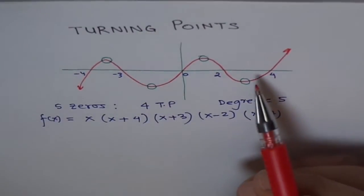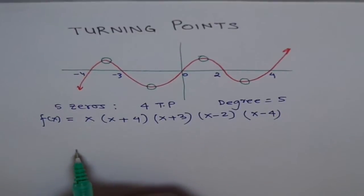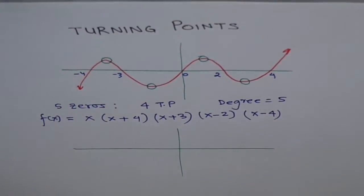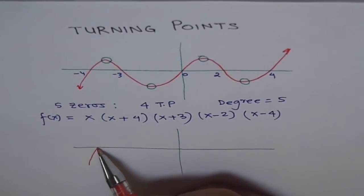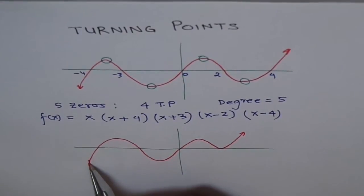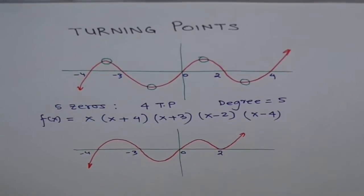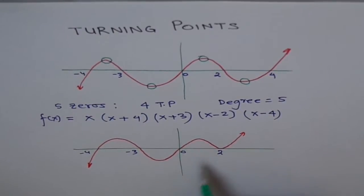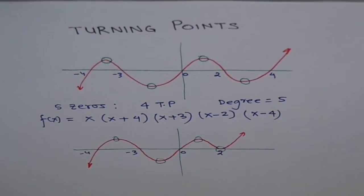There could be another one where we have a double zero. This zero could be here, and in that case it will turn — it bounces back. So let's say this time we have zeros at minus 4, minus 3, 0, and at 2 we have a double zero — multiplicity is 2. How many turning points? 1, 2, 3, 4. So we got 4 turning points.